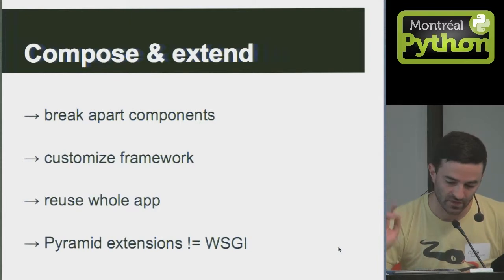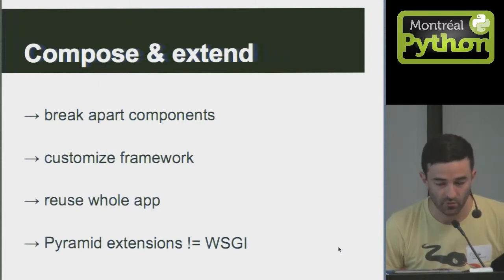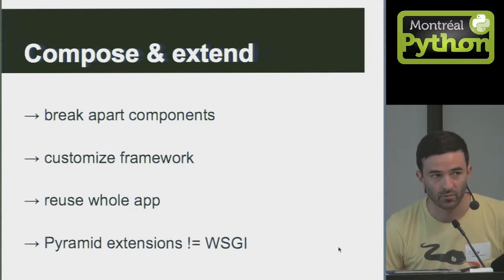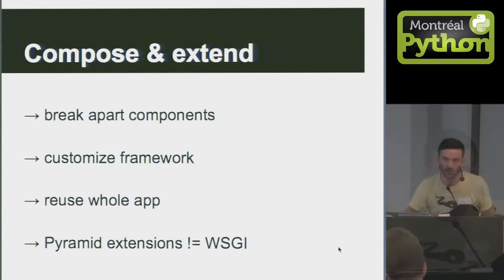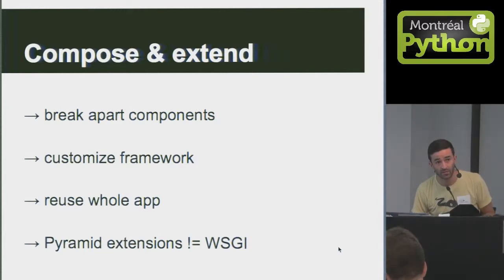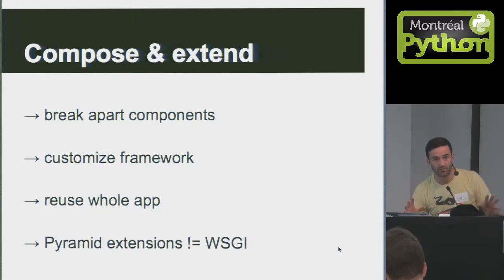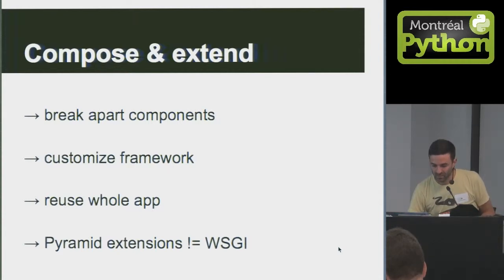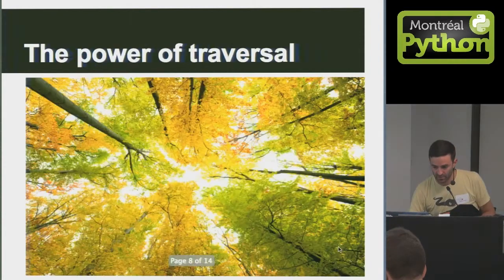One pain with Pyramid is when you write Pyramid extensions — such as Pyramid SQLAlchemy Utility — you're not writing WSGI extensions, you're really writing Pyramid-specific stuff. Just so you know, because the next part is the power of traversal.